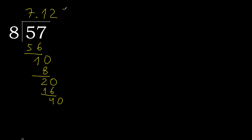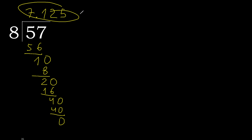8 multiplied by 5 is 40. Subtract: 0. Therefore finished. 57 divided by 8 is 7.125.